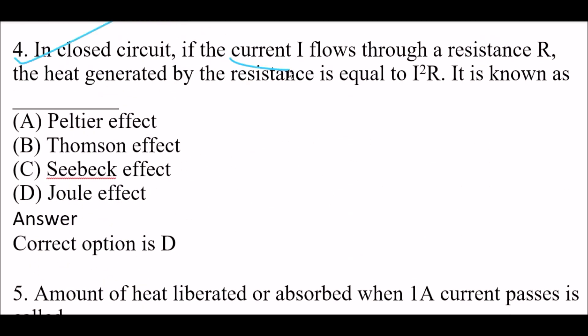Next question: in a closed circuit, if current flows through a resistance R, the heat generated is equal to I² × R. This is known as — Option A: Peltier effect. Option B: Thompson effect. Option C: Seebeck effect. Option D: Joule effect. Right answer is Option D — Joule effect.